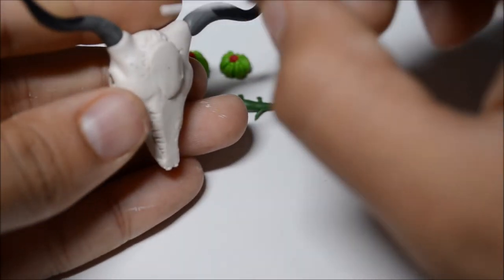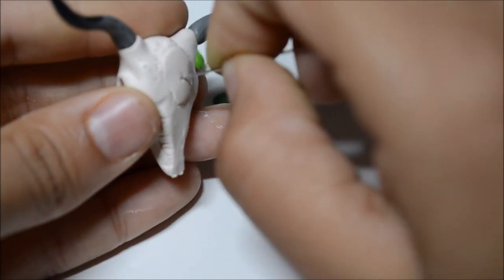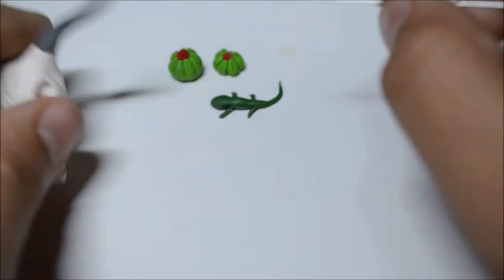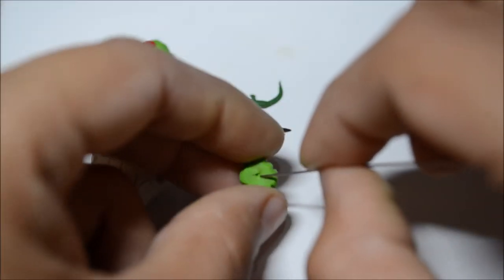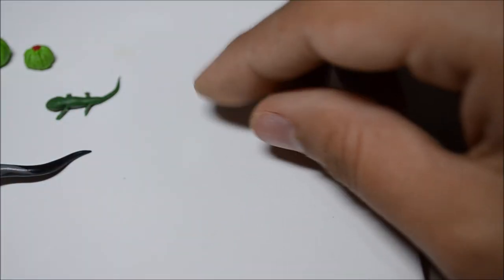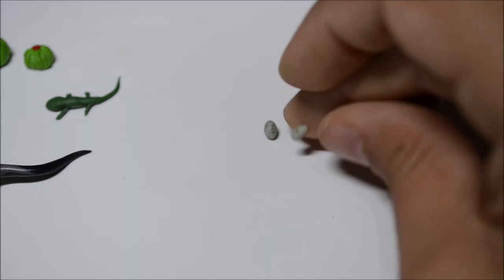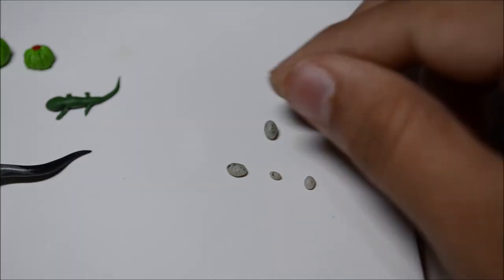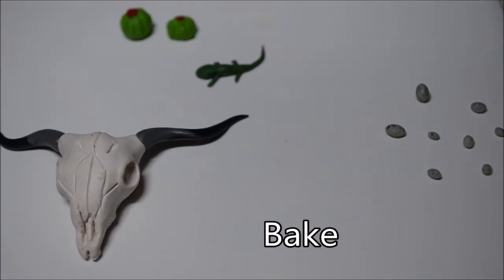So before I bake them, I'm making a little hole with the wire, because that's how I'm going to secure them to the sand later on. And also I'm taking the granite clay and making little rugs, just a whole bunch of them. Now they are ready to bake.